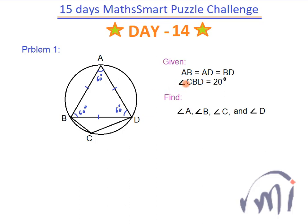We are also provided that angle CBD is 20 degrees, so this angle is 20 degrees. Now we have to find angle A, angle B, angle C, and angle D. Angle A we have already found and it is equal to 60 degrees.